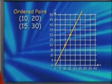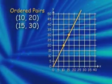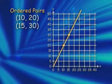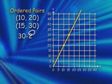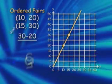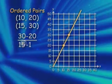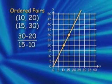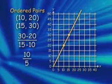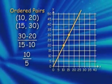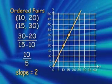Here are the original ordered pairs and the graph formed by those points. We'll take the difference of the y-coordinates — 30 minus 20 — and the difference of the x-coordinates — 15 minus 10. That's 10 over 5, which is 2. The slope of the line is 2.